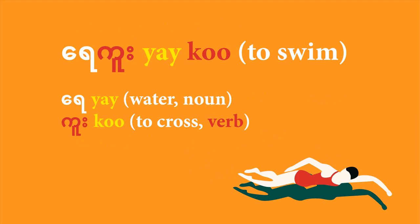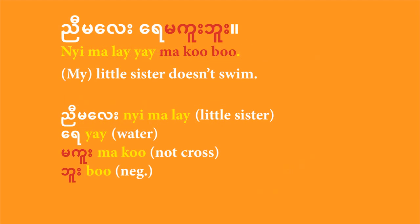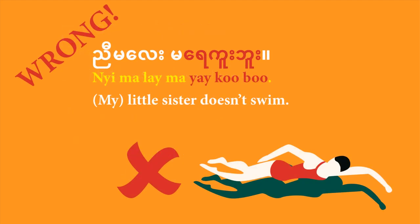With that knowledge, you can see that you don't need to negate 'ye,' the noun part. All you have to do is negate the actual verb 'ku,' to cross. So you can say 'nyamale ye makubu' — my sister doesn't cross the water, my sister doesn't swim. You cannot say 'nyamale mayekubu' — that's wrong. That's a common mistake that some beginners tend to make.